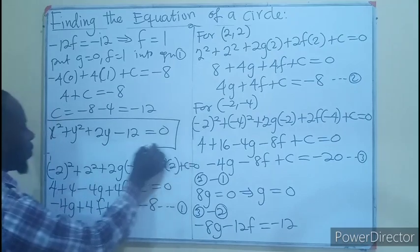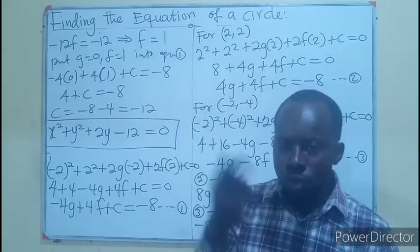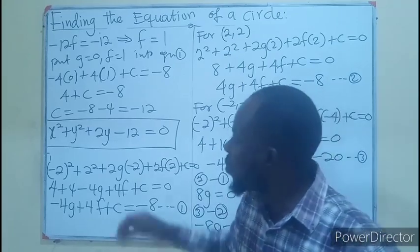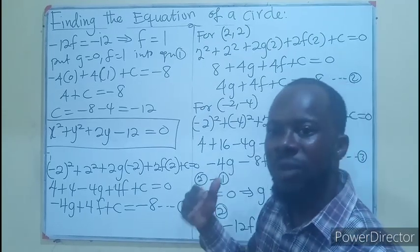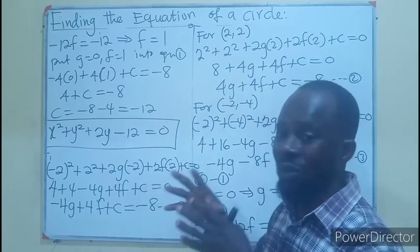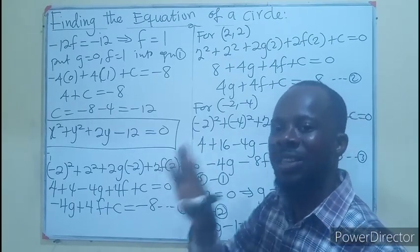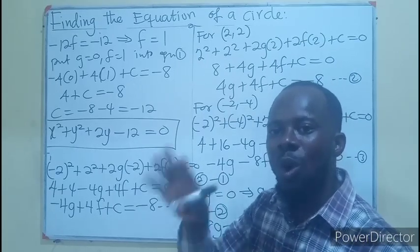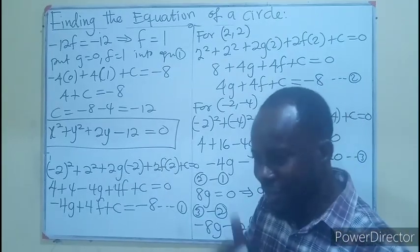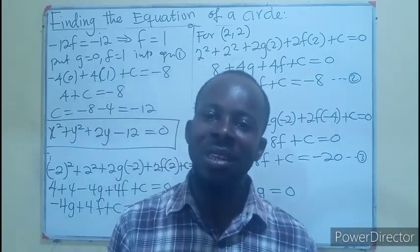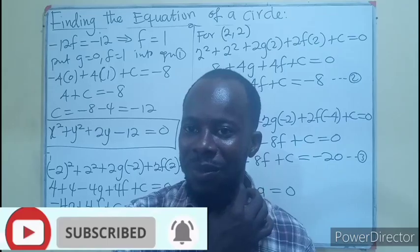The equation of the circle passing through the three points (-2, 2), (2, 2), and (-2, -4) is x squared plus y squared plus 2y minus 12 equals zero. The concept here is clear: to find the equation of a circle when given three points, all those points must satisfy the general equation of a circle. Thank you for watching — share and comment, and if this is your first time, subscribe to the channel and click the notification bell to receive more notifications.